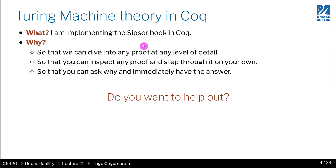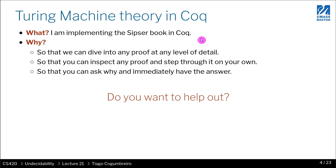I am implementing the Sipser book on Introduction to Theory of Computing using the Coq programming language. The reason I'm doing this is so that you can walk through any proof that is in the book that I covered and step through it step by step. I'm going to explain the proofs informally so you get the intuition behind why things are happening the way they are, but at any point you can open the editor and step through the various finer details of the proof.